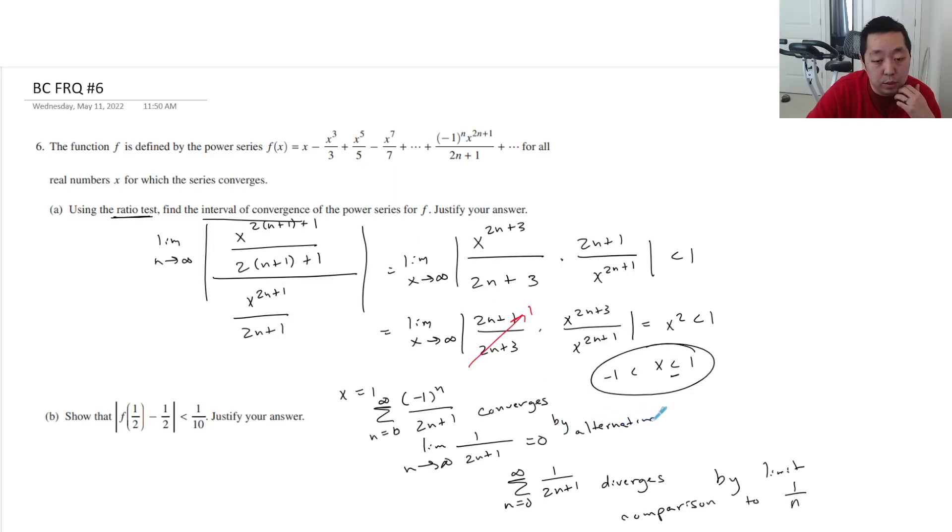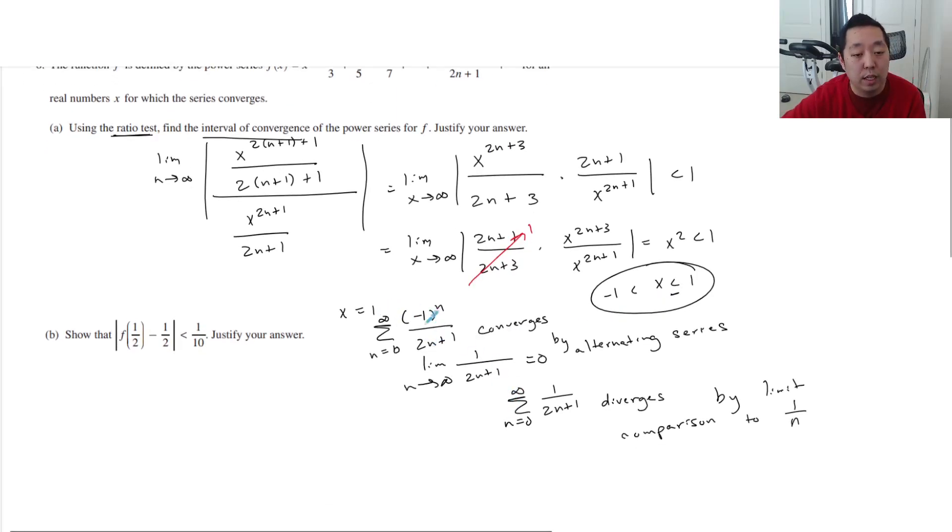So it's confusing that they ask you to use a ratio test to find the interval. I'm just going to do finding the interval the normal way. You always use ratio test to find the general bounds, but the endpoints we've got to just check in specifically. And so at 1 it converges, but at negative 1 it diverges.